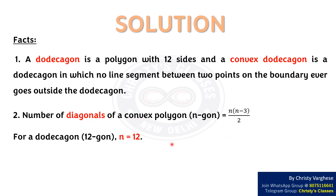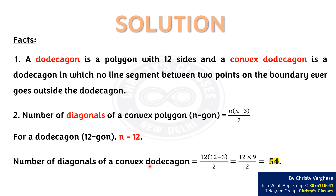For a 12-gon, n equals 12. The number of diagonals equals 12 × (12 − 3) / 2, that is 12 × 9 / 2, which equals 54. Hence, option B is the right answer.